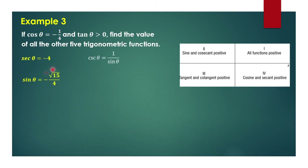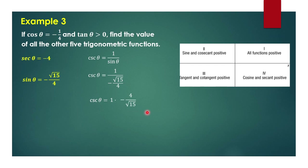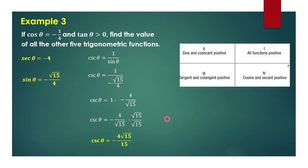For cosecant, we take the reciprocal of sine theta: 1 over negative square root of 15 over 4. This equals 1 times negative 4 over square root of 15, giving negative 4 over square root of 15. To rationalize, we multiply by square root of 15 over square root of 15, giving cosecant theta equal to negative 4 square root of 15 over 15.